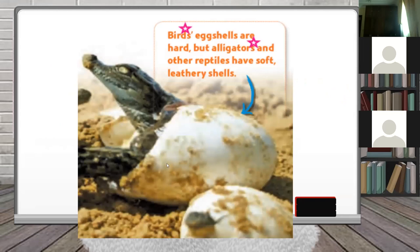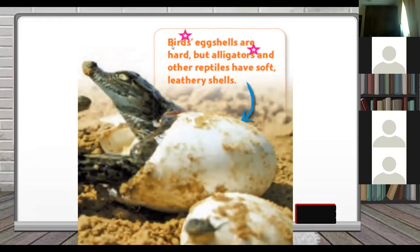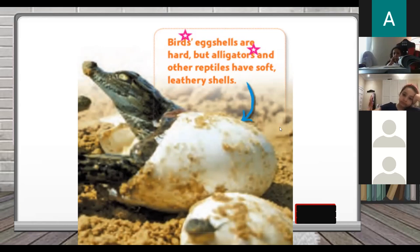Take a look at this one - is this a crocodile? Or an alligator? This is an alligator. A bird's eggshell is very hard. Everyone has seen a bird eggshell. A bird eggshell is very hard from the outside. But the alligator and other reptiles have a soft, leathery shell - so the egg of a reptile is soft from the outside. Can you imagine that? It is soft and leathery - not hard like a bird eggshell. This is the first difference.